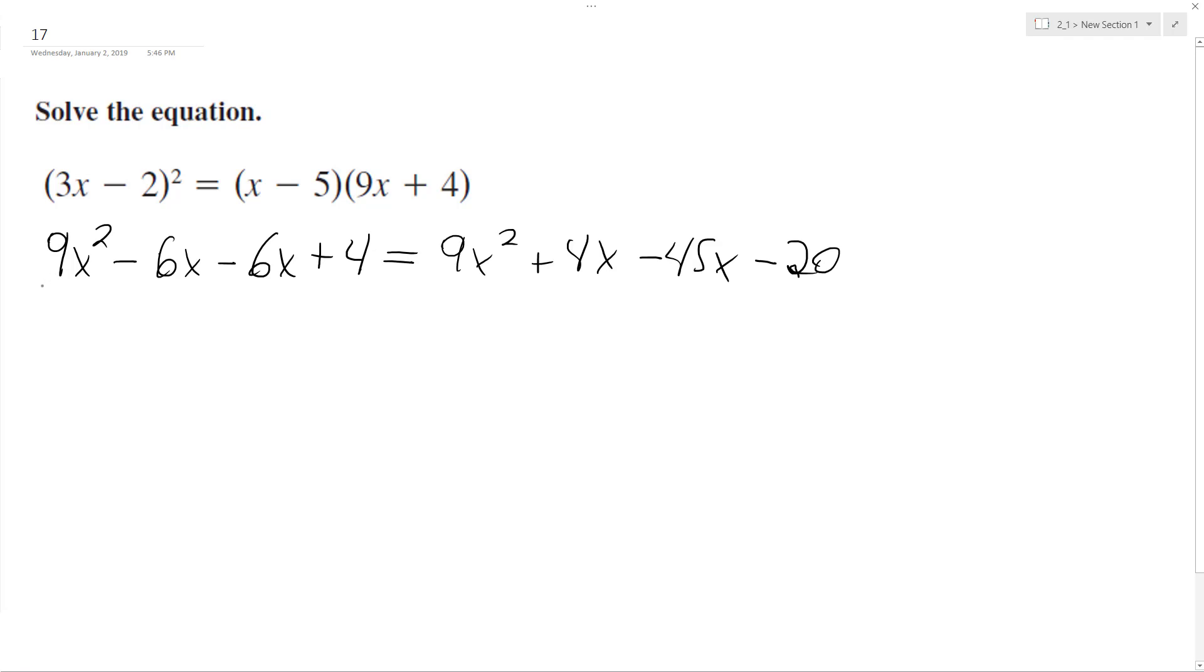So we want to combine like terms. I can already see that the 9x² terms cancel out, so that's nice.